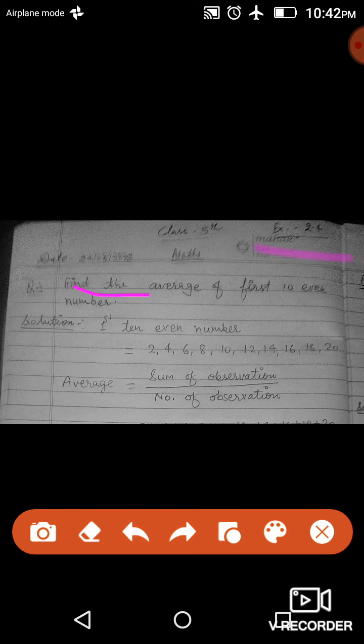First question: Find the average of first ten even numbers. First you have to write the first ten even numbers. First ten even numbers is the table of two: 2, 4, 6, 8, 10, 12, 14, 16, 18, and 20.